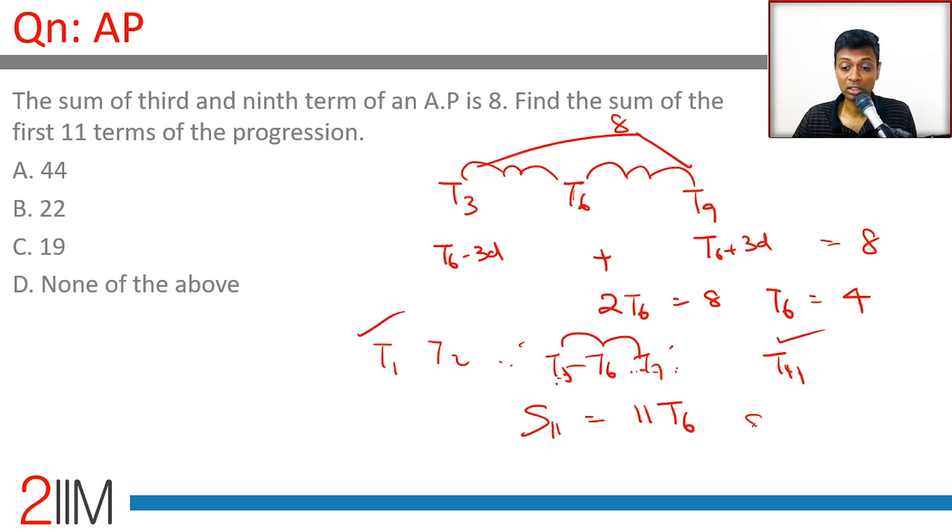The sixth term is 4, so the sum of 11 terms is 4 times 11, which is 44. Done.